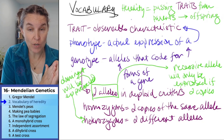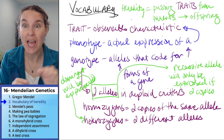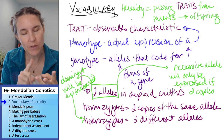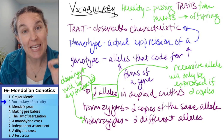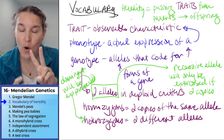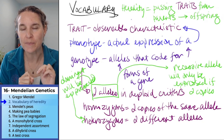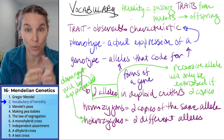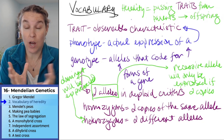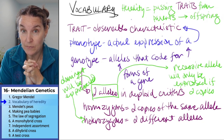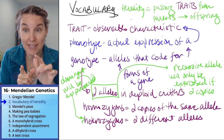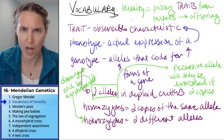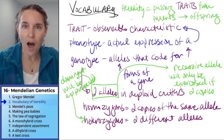Mendel found seven characteristics — seven traits — describing his peas. We're going to look at each of those seven traits. Each trait had two alleles, and one allele was dominant and one was recessive. We're going to have lots of practice with this vocabulary and something actual and physical to talk about. Onward to pea plants.